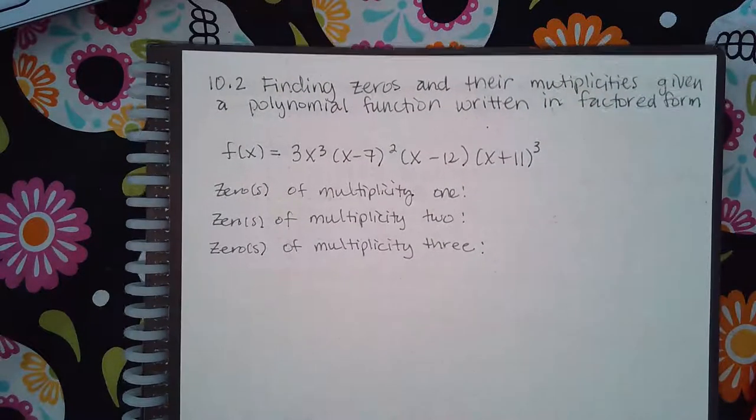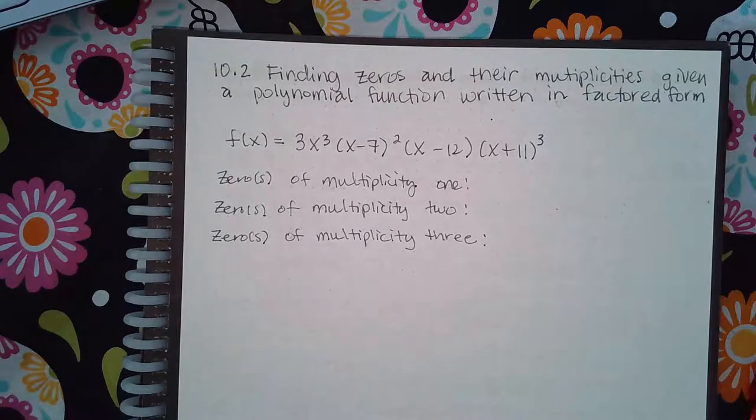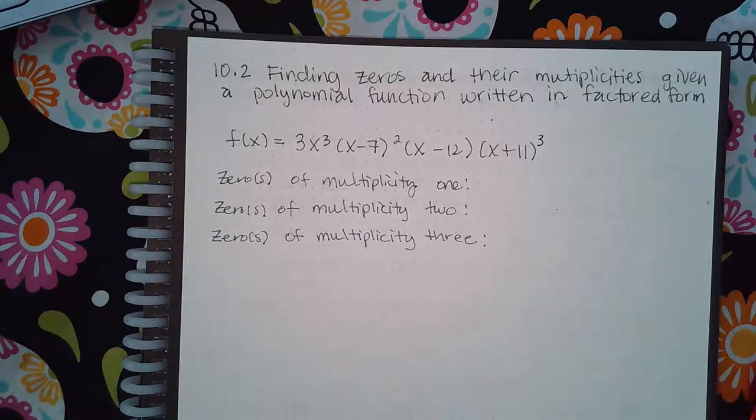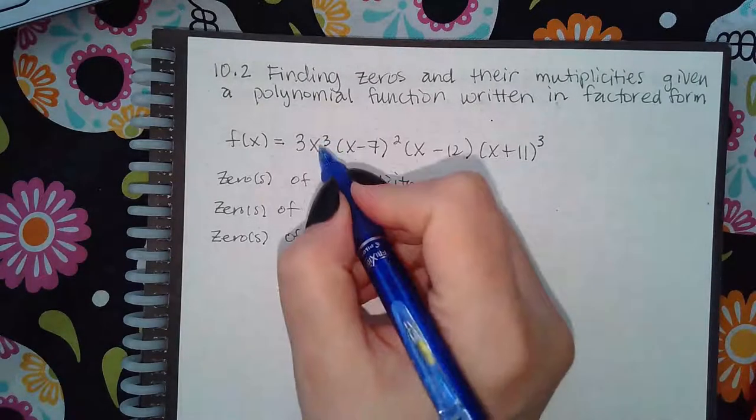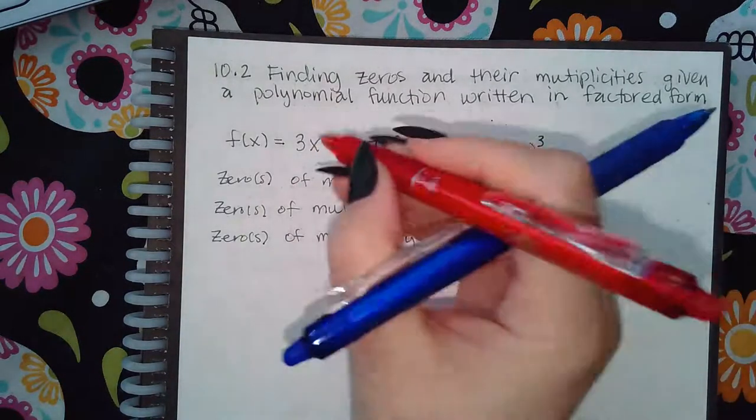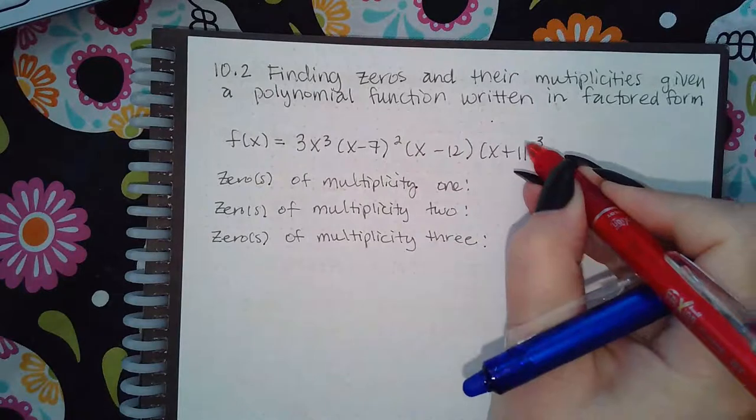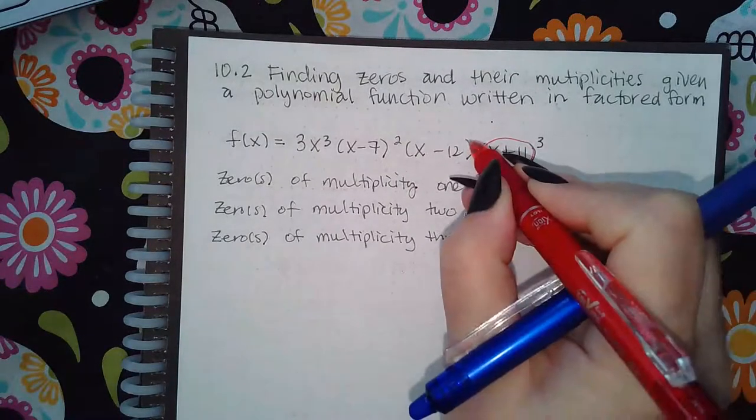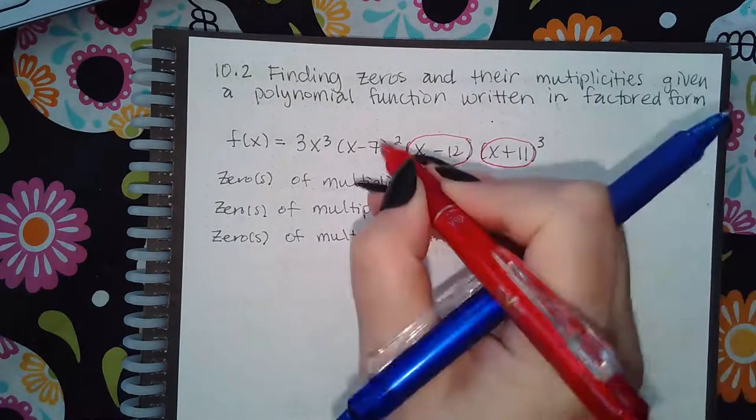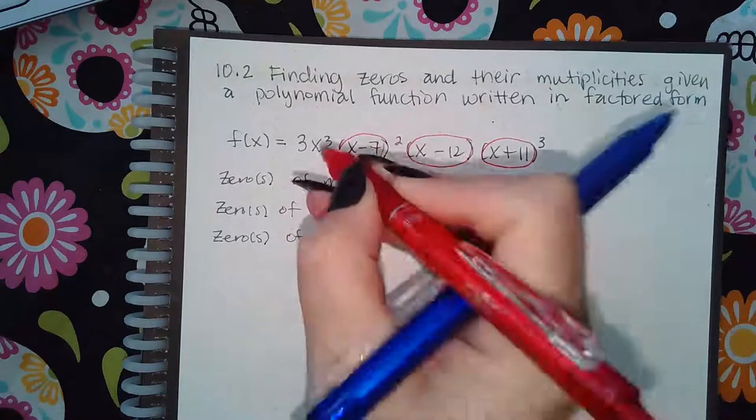So here it says finding zeros and their multiplicity given a polynomial function written in factored form. So again, I would do the same thing, but I'm only going to take what's inside this with the exponent. So I'm only going to take this, and I'm going to take this, I'm going to take this, and the cube only applies to this.